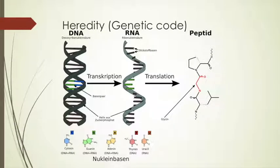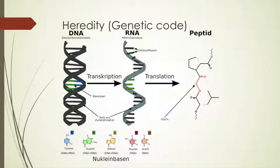Heredity, or the genetic code: every organism in the world has to have a blueprint or instruction on how to make another one similar to that organism. Heredity, or the genetic code, is the basis of the small changes that will eventually lead to the evolution of species.